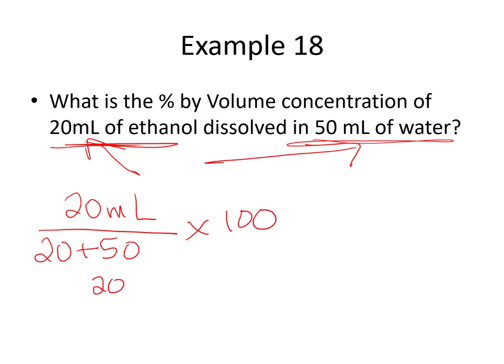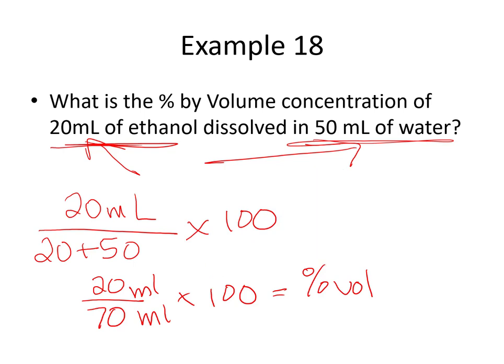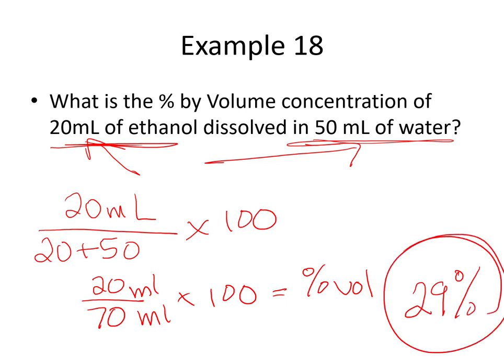So this becomes 20 divided by 70 times 100. Working that out, 20 divided by 70 gives us approximately 0.29, and when we multiply by 100 we get 29% as our final answer.